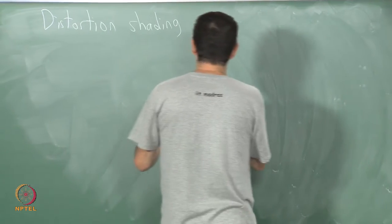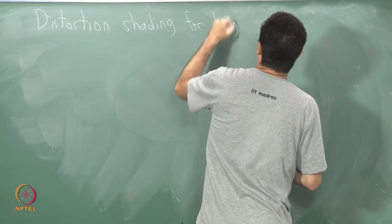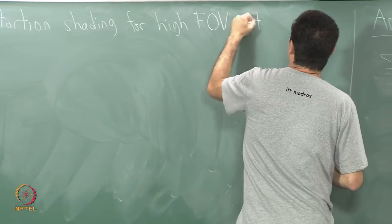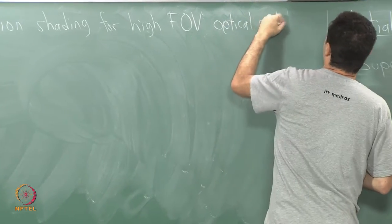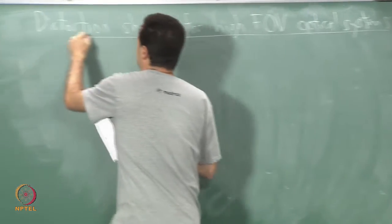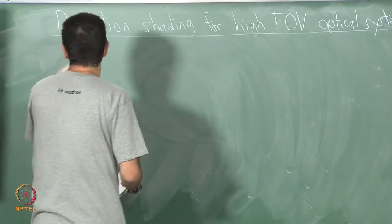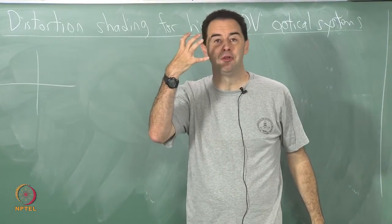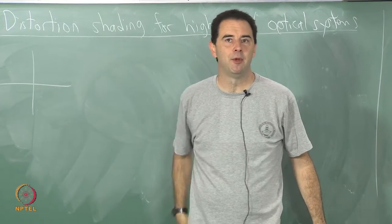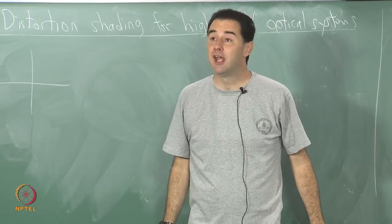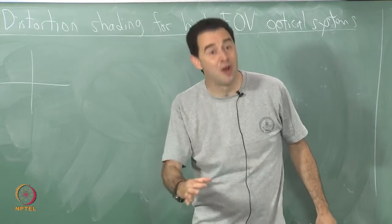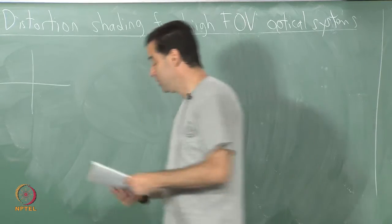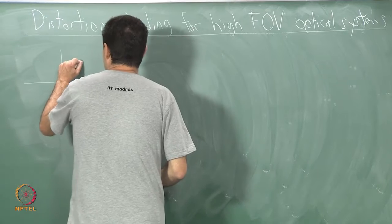Distortion shading for high field of view optical systems. What do you do in that case? For example, if you take a look at most head mounted displays that have a high field of view lens, this exists in the Oculus Rift DK2 lenses that are in the lab. If you put the lens down on a piece of graph paper, the grid lines will look distorted inward like this.